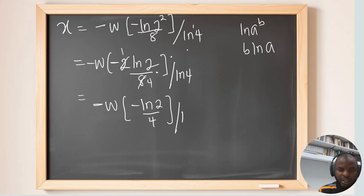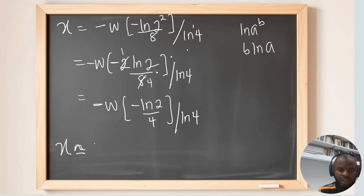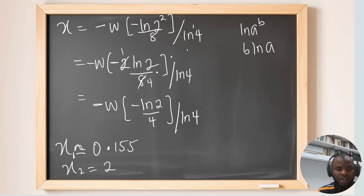Using a math library to evaluate the Lambert W function, we find two approximate values of x: x₁ ≈ 0.145 and x₂ = 2. If you plug x = 2 back into the original equation 4^x = 8x, it works. Thank you very much for watching — see you next time.